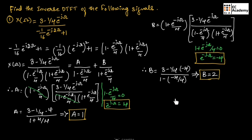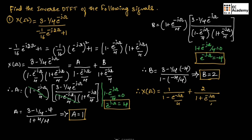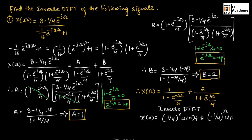We got the values A = 1 and B = 2. Substituting into the partial fraction expression, X(ω) equals 1/(1 − e^(−jω)/4) plus 2/(1 + e^(−jω)/4). Taking the inverse DTFT, we get x(n) equal to (1/4)^n · u(n) plus 2·(−1/4)^n · u(n). This is the inverse DTFT for the given sequence.